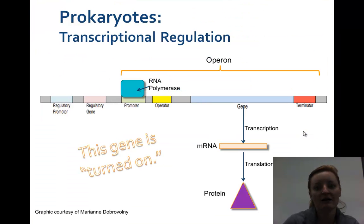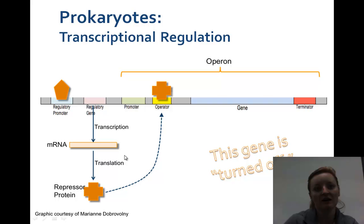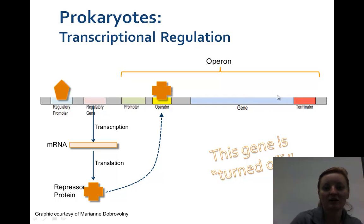Here we have an operon where, once it hits RNA polymerase, we can actually use the gene and make a protein — that's how prokaryotes turn genes on through transcription. We can also turn genes off: a regulatory promoter says we don't need any more of this, so it will not connect. A regulatory protein is made, it connects to the operator, and the gene is turned off.